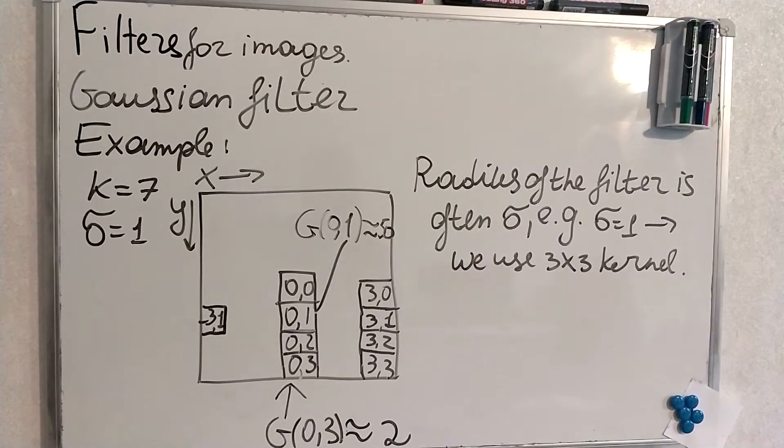In general case, radius of the filter often equals sigma. For example, when we have sigma 1, we will use 3x3 kernel.